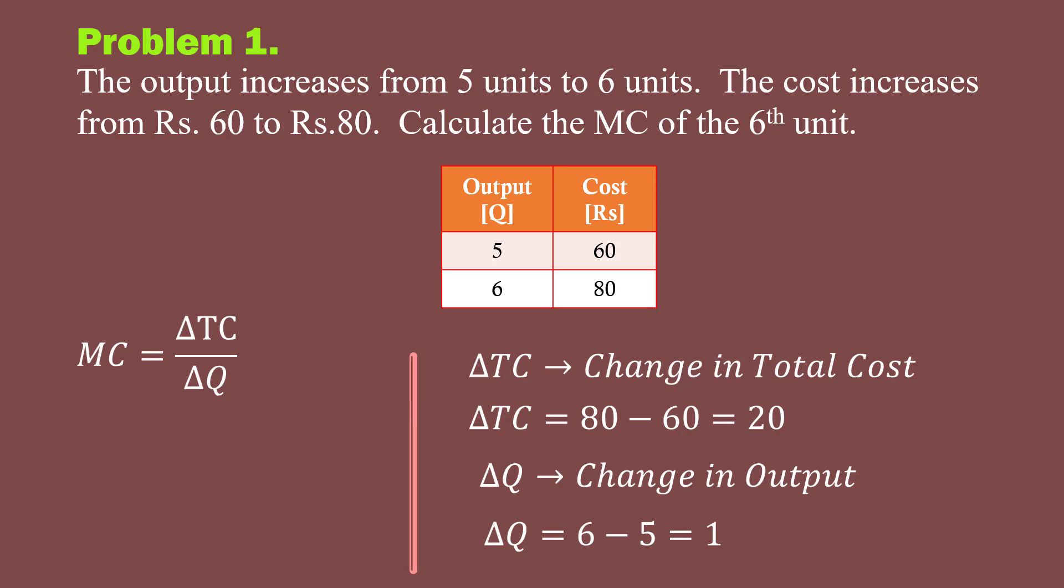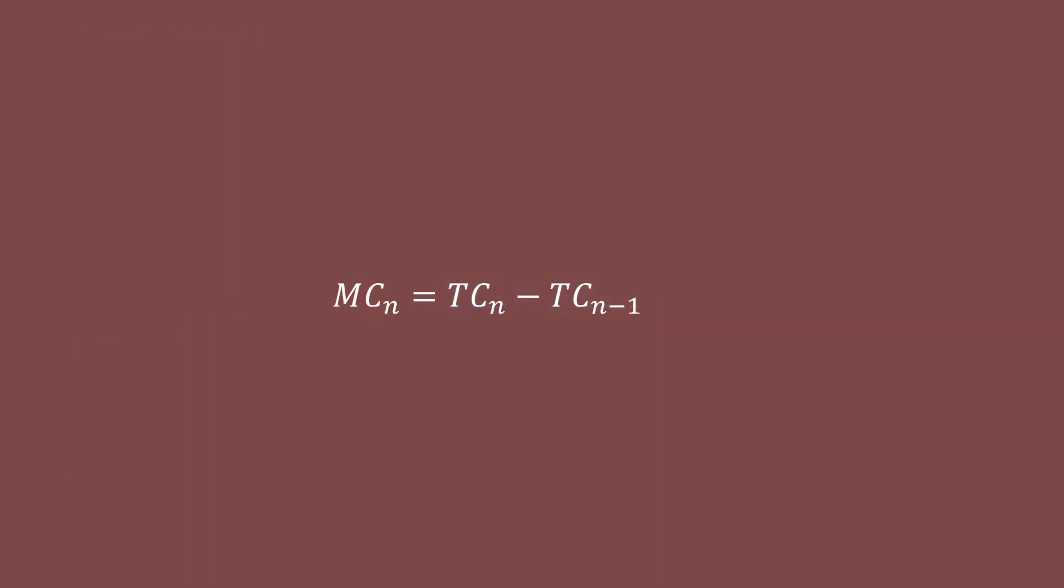We shall substitute these values in the formula. Marginal cost equals 20 over 1, which is 20. We get the same result. Marginal cost is 20 rupees. Shall we conclude that one can be used in the place of another? No. Certainly no. Why? Examine this problem.